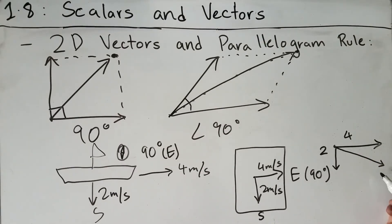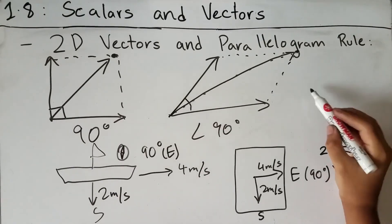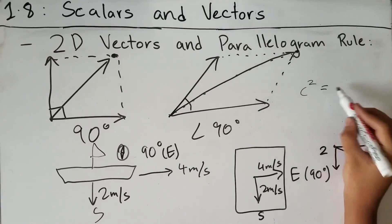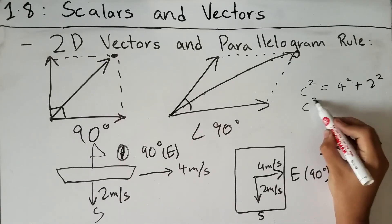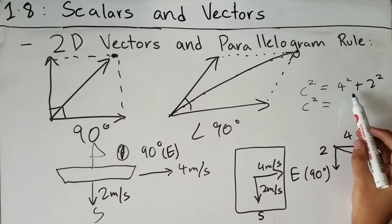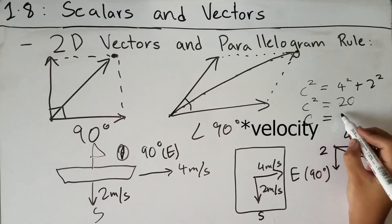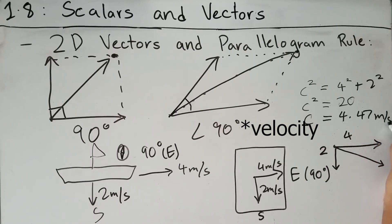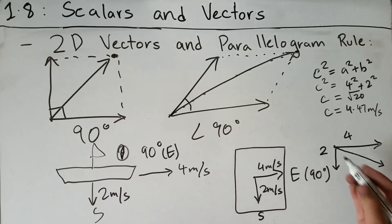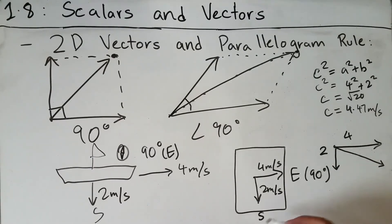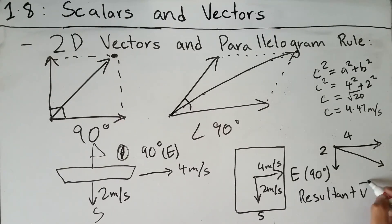Using the Pythagorean theorem: c squared equals 4 squared plus 2 squared, giving c squared equals 16 plus 4, which is 20. The resultant magnitude is the square root of 20, which is 4.47 meters per second. The direction is southeast, so the resultant velocity is 4.47 meters per second southeast.